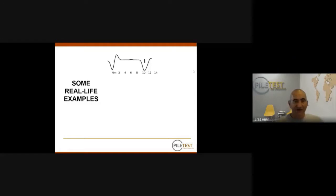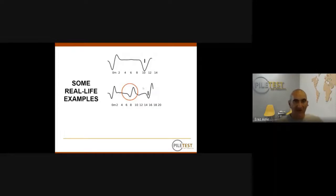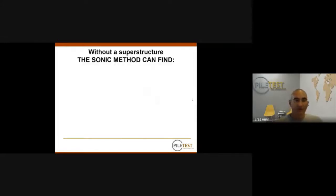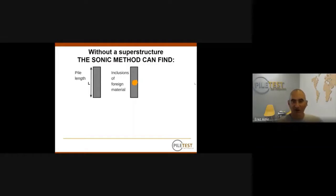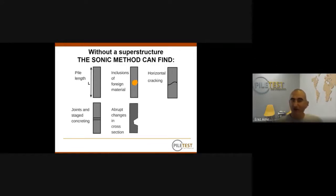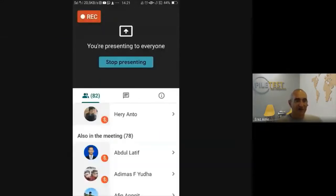Here are some real-life examples: a good pile with the trigger hammer and the echo from the bottom at 10 meters, a pile with a necking, and a pile with a bulge. Without a superstructure — regular testing — the sonic test can find pile length, inclusions or foreign materials if large enough, horizontal cracking joints, stage concreting, sharp changes in cross-section, and even distinct changes in soil layers. However, in our case — under an existing structure — length is the only thing we can expect.